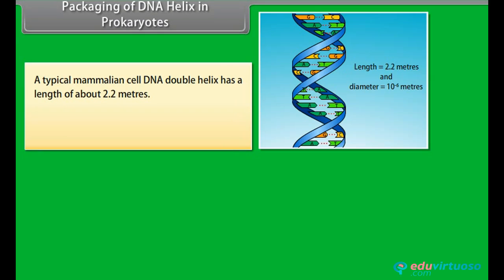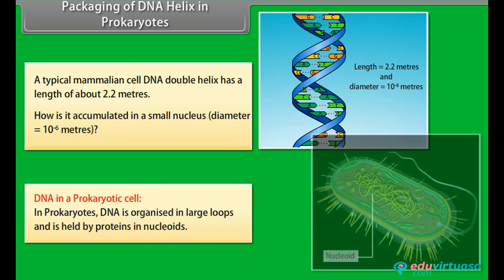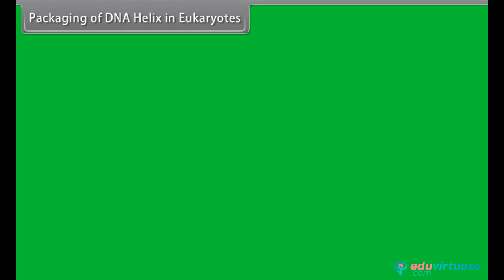A typical mammalian cell DNA double helix has a length of about 2.2 meters. How is it accumulated in a small nucleus? In prokaryotes, DNA is organized in large loops and is held by proteins in nucleoids.